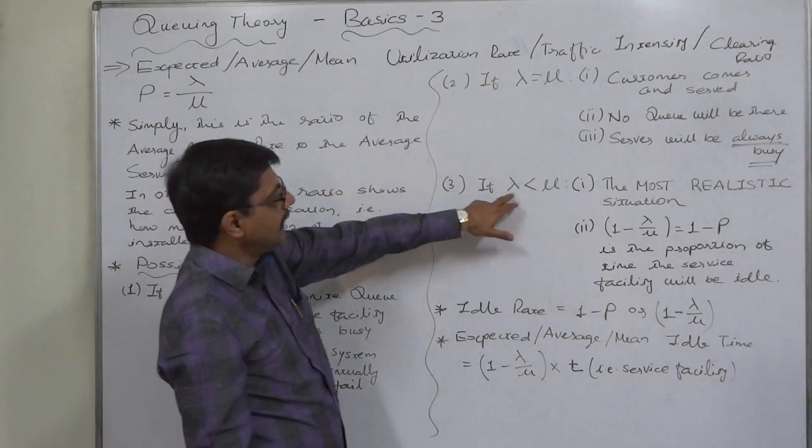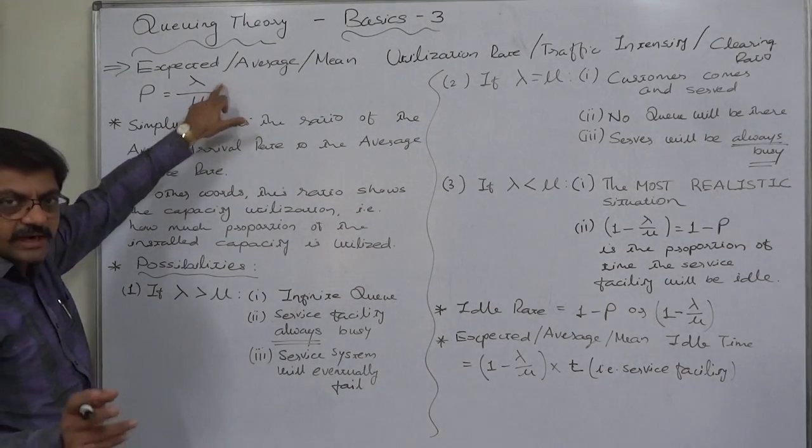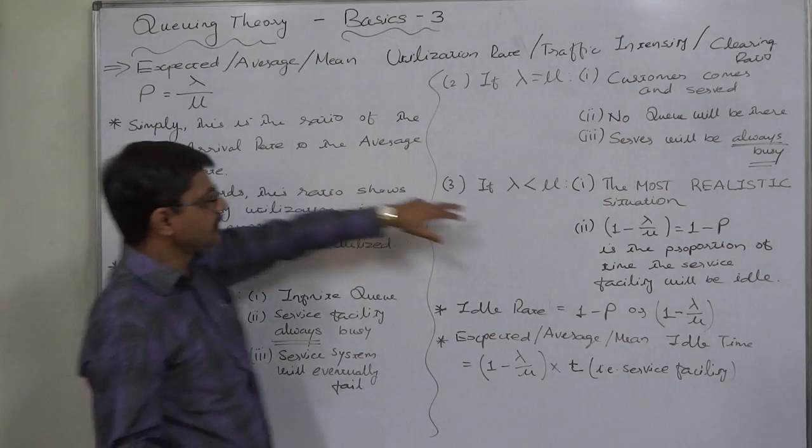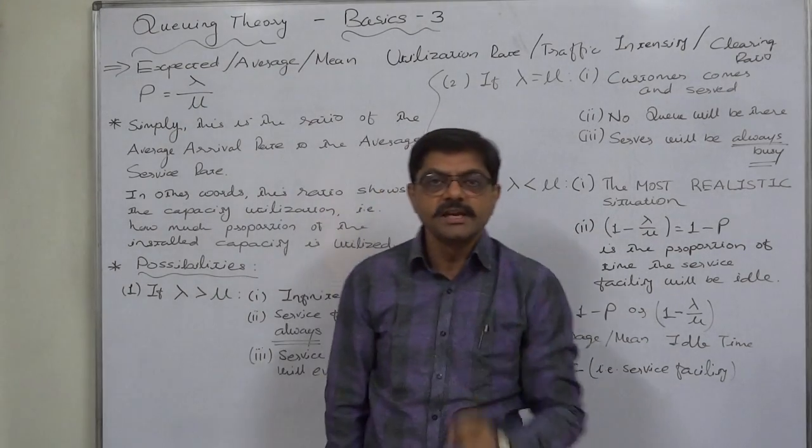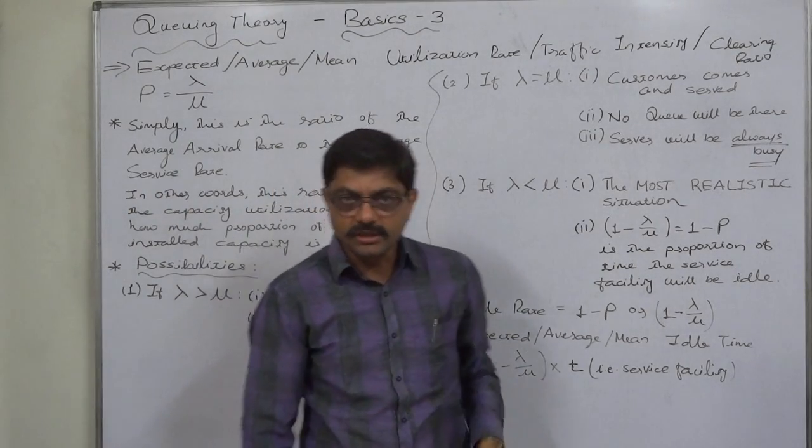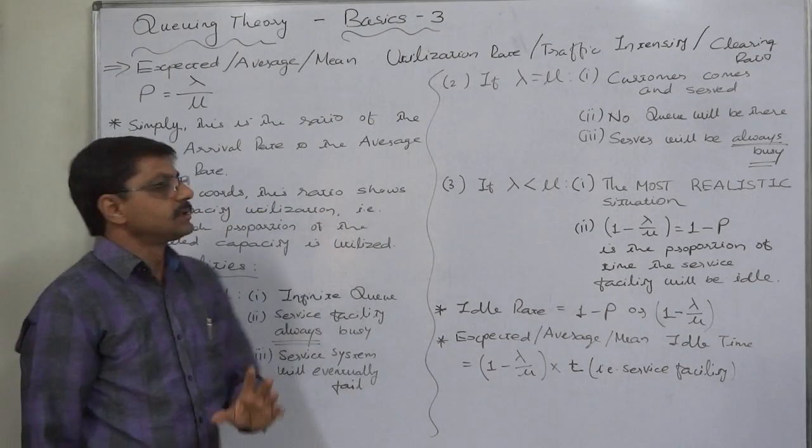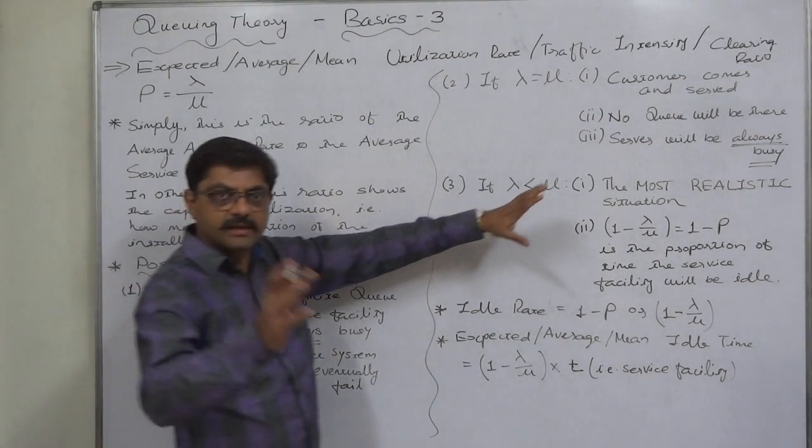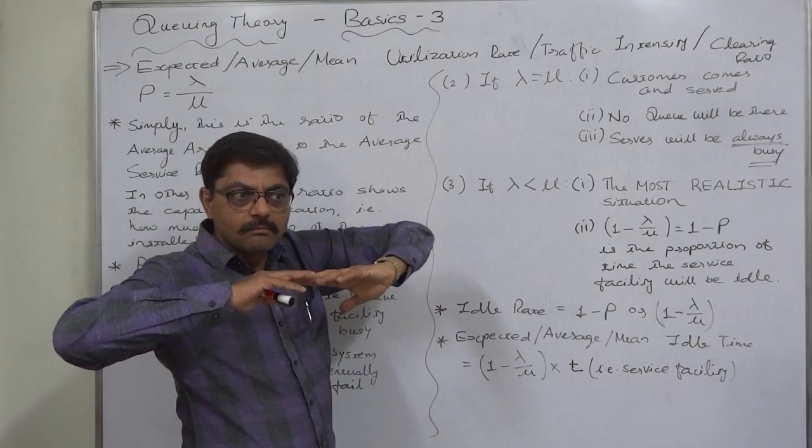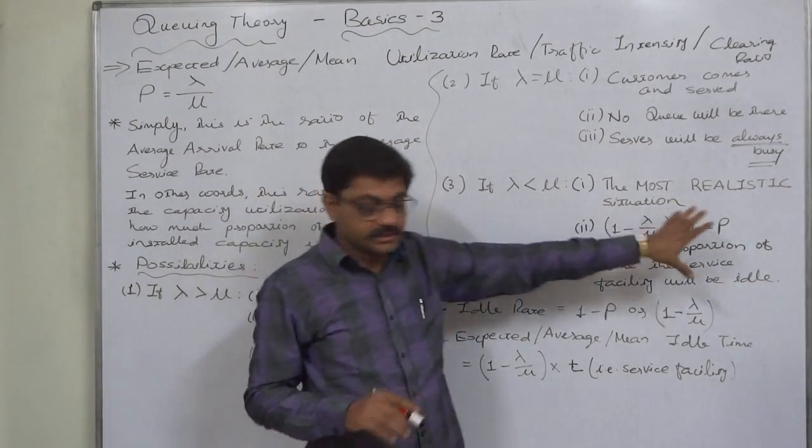And the third possibility is lambda less than mu. That is arrival rate or average arrival rate is less than the average service rate. This is the most realistic situation. Almost all service counters work on the basis of this situation or are installed assuming this kind of situation.